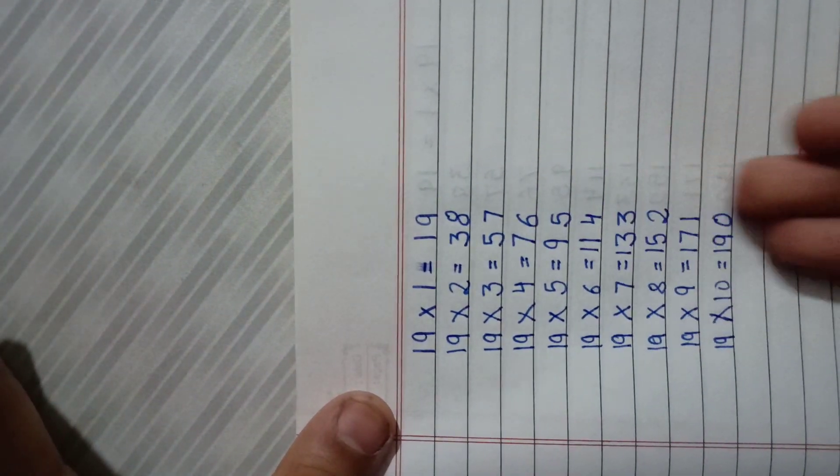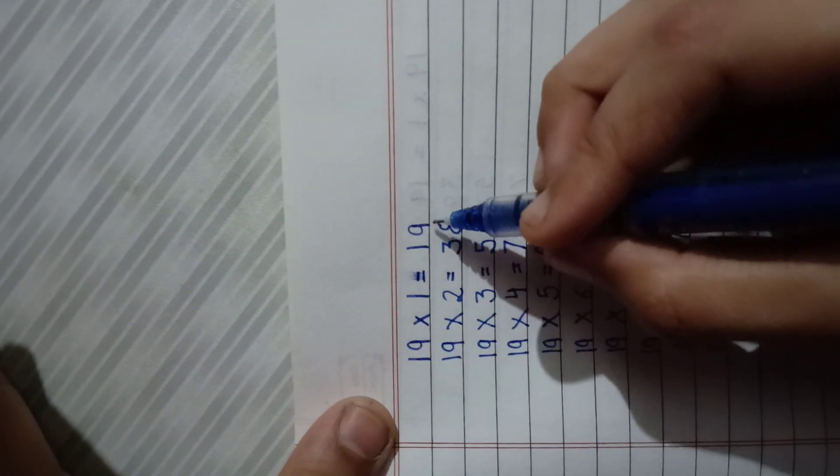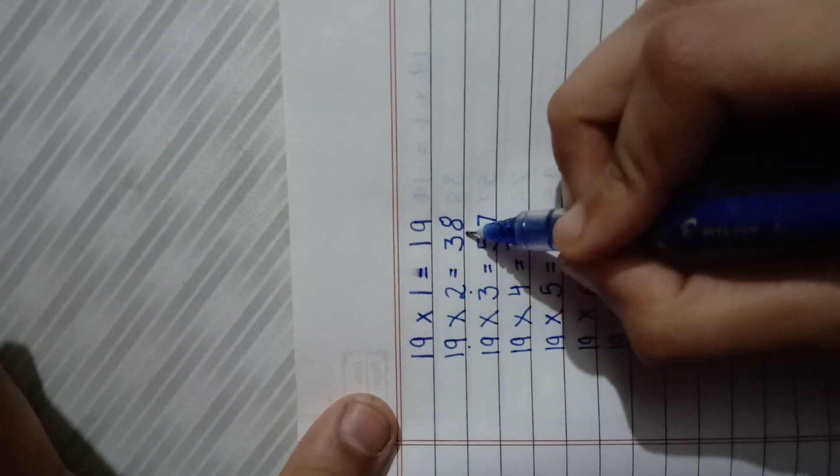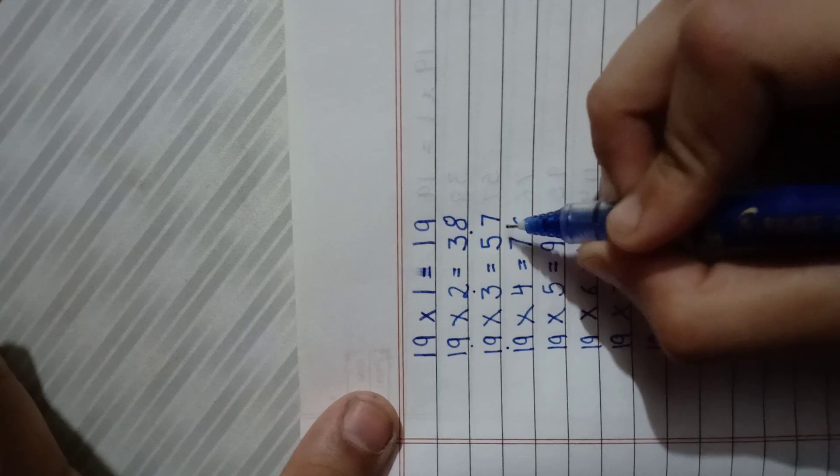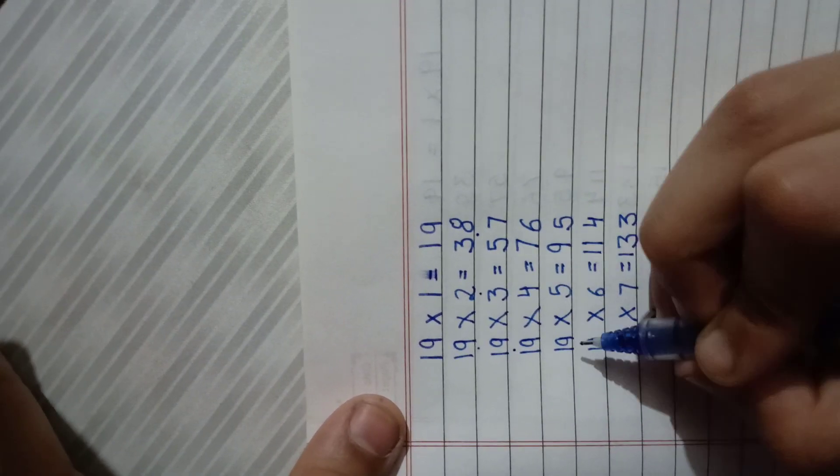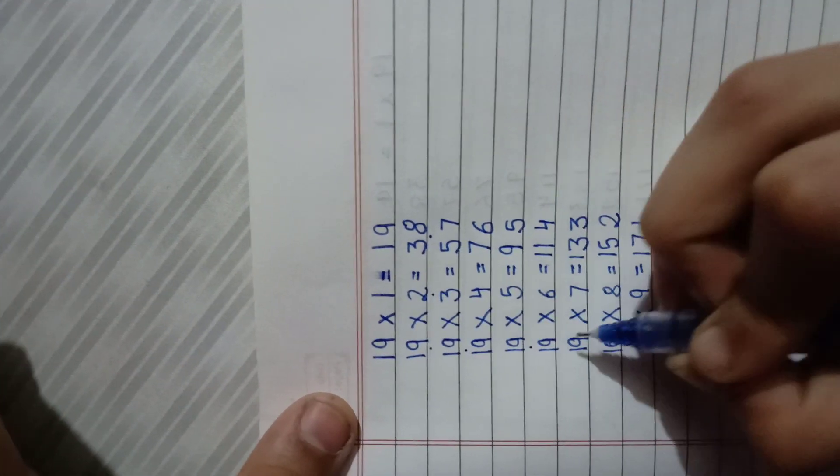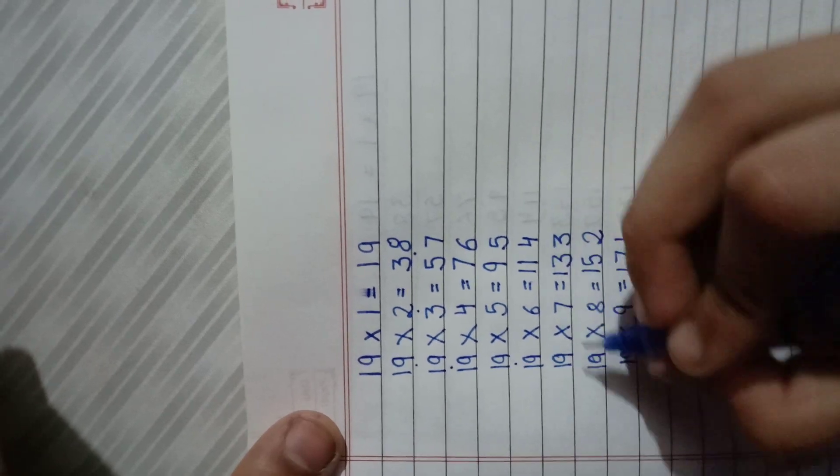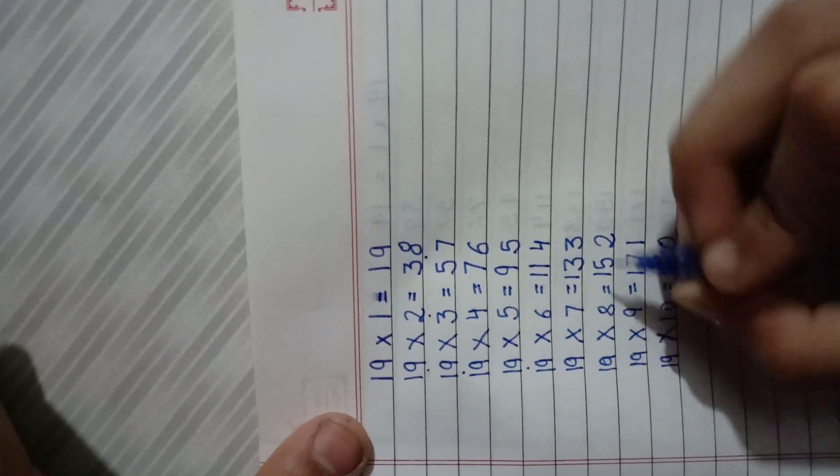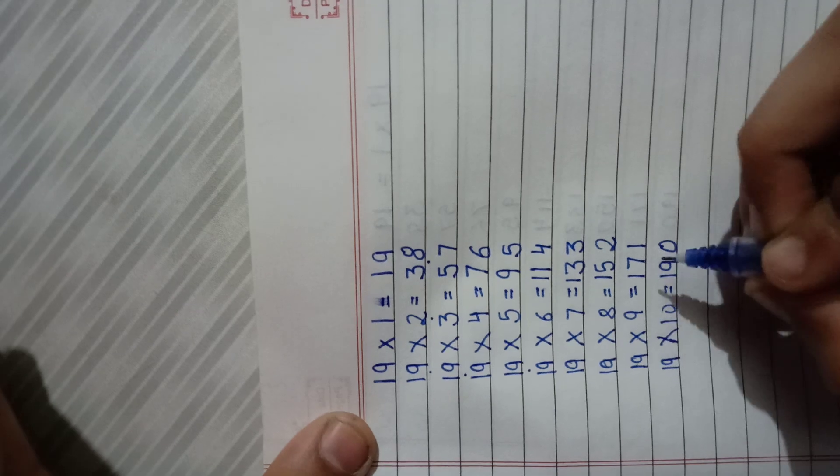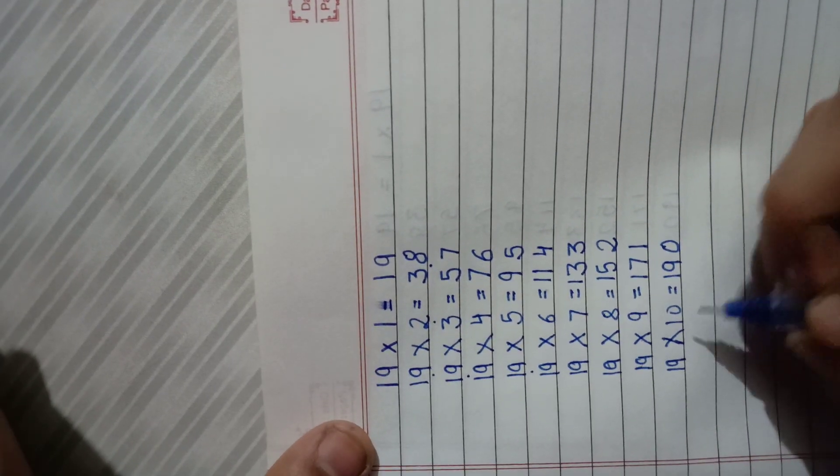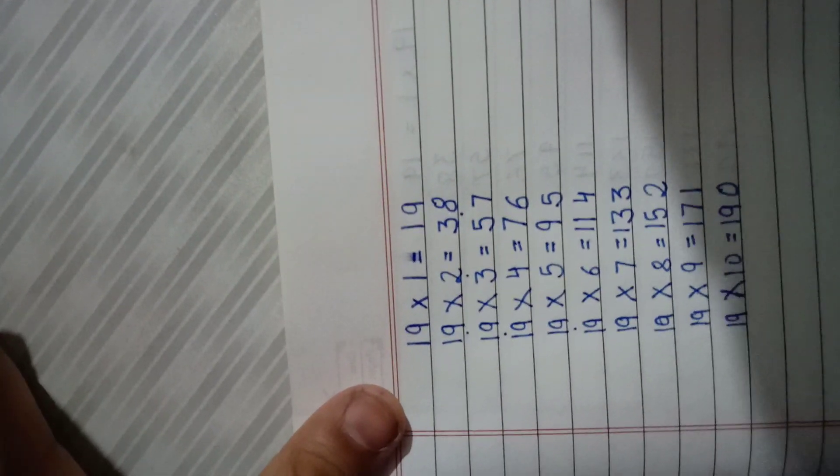So this is the table of 19. 19 ones are 19, 19 twos are 38, 19 threes are 57, 19 fours are 76, 19 fives are 95, 19 sixes are 114, 19 sevens are 133, 19 eights are 152, 19 nines are 171, and 19 tens are 190.